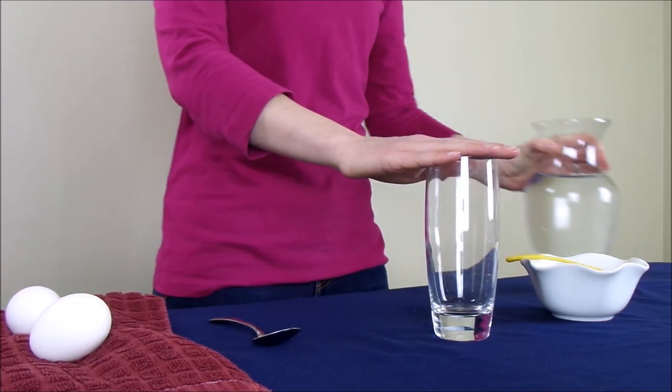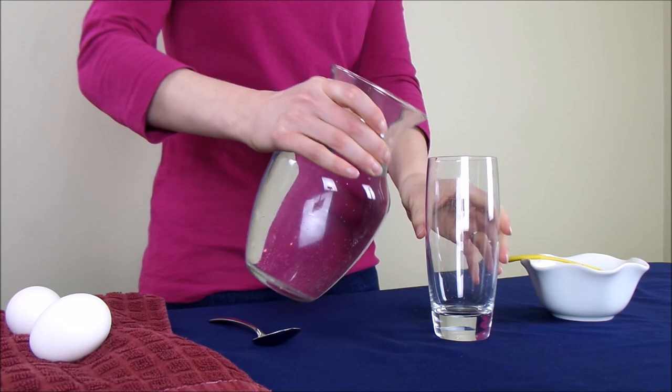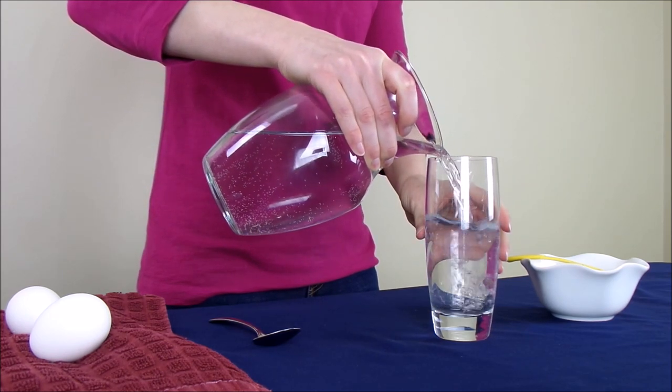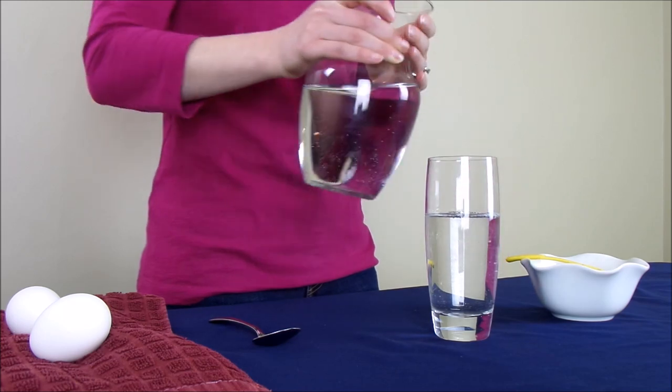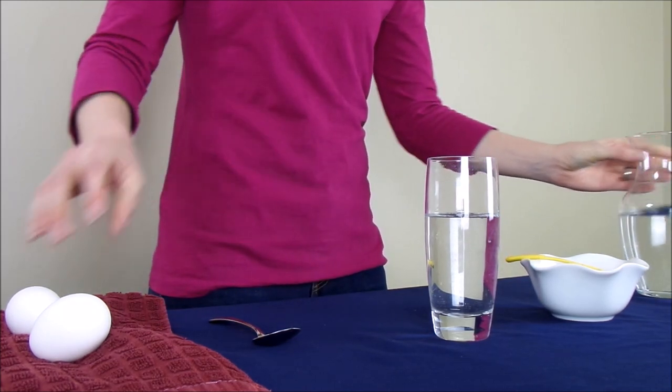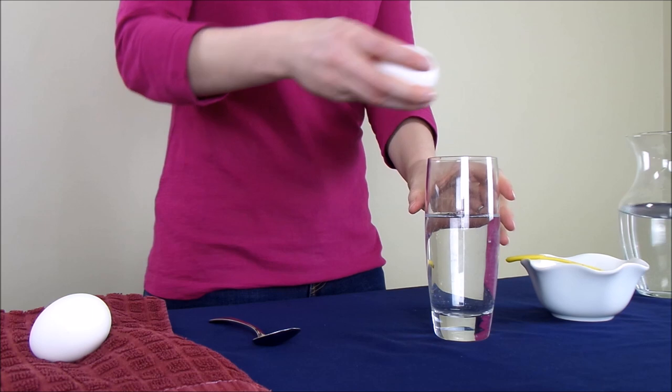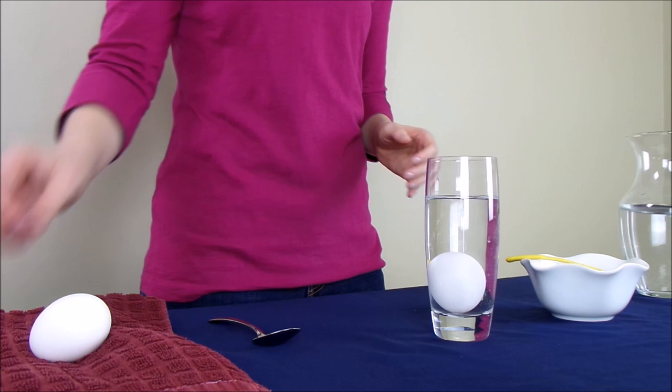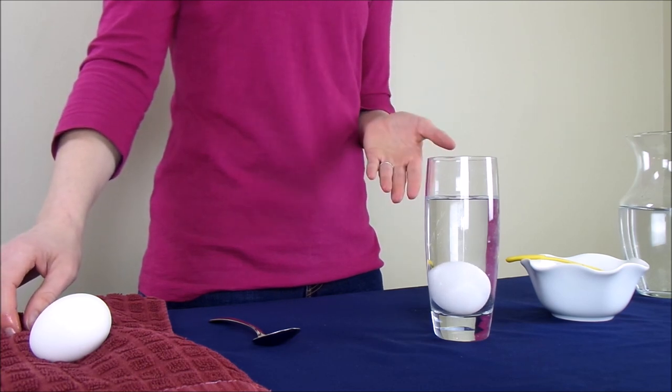So the first thing we're going to do is take our glass and fill it about three quarters of the way full with water. Then we're going to take our egg and slowly and carefully drop it in. And you'll notice that the egg sinks.